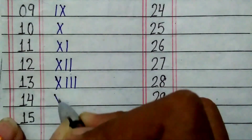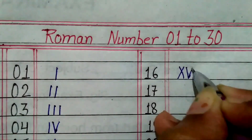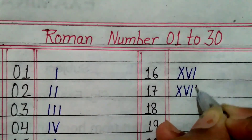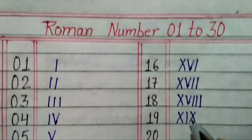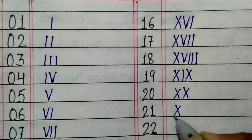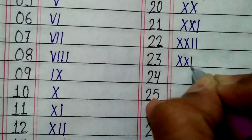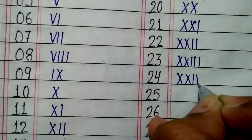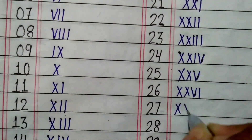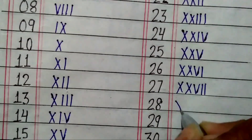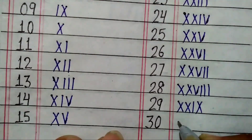14 = XIV, 15 = XV, 16 = XVI, 17 = XVII, 18 = XVIII, 19 = XIX, 20 = XX, 21 = XXI, 22 = XXII, 23 = XXIII, 24 = XXIV, 25 = XXV, 26 = XXVI, 27 = XXVII, 28 = XXVIII, 29 = XXIX, 30 = XXX.